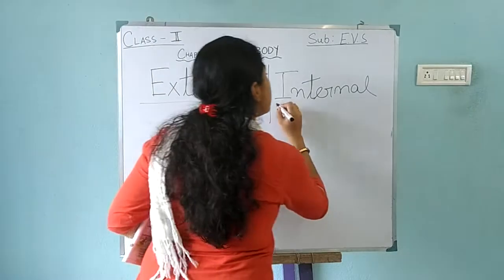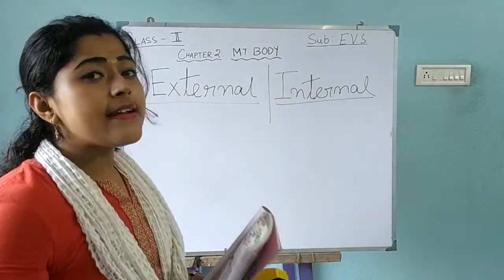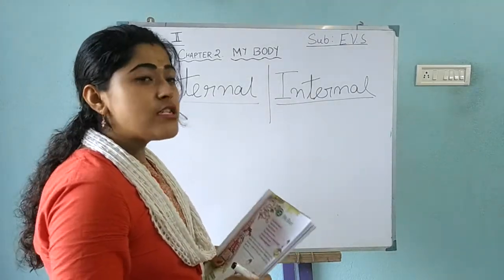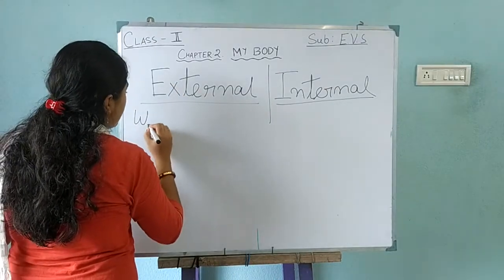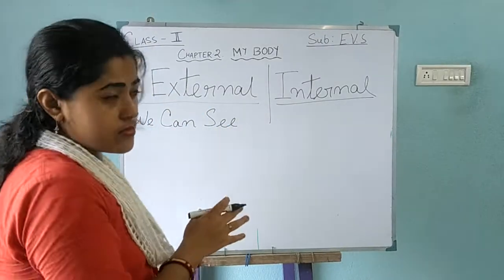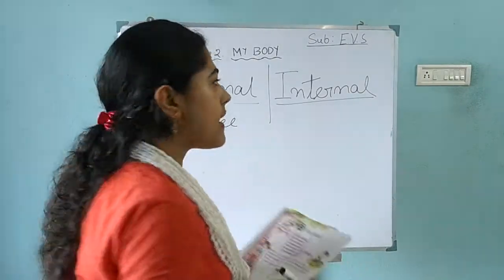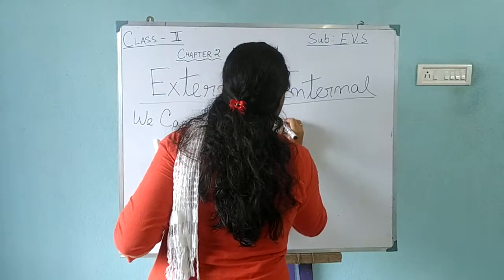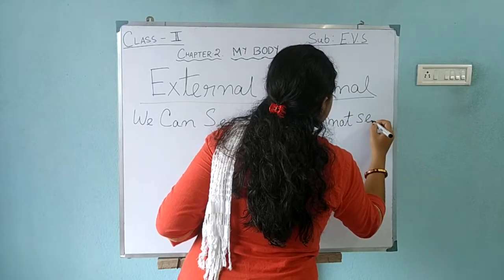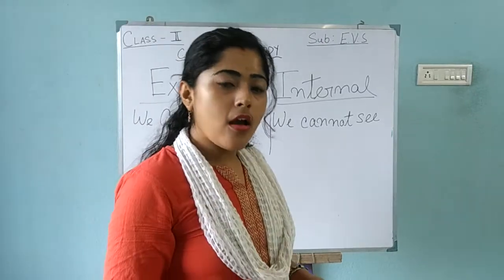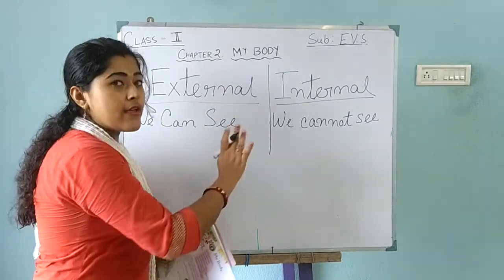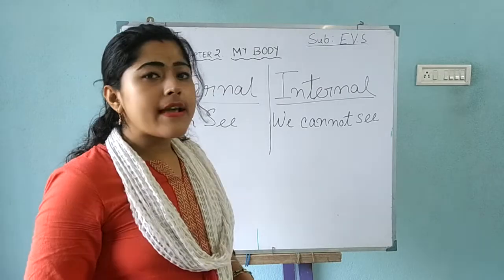External and internal — which is external? External organs are those parts which we can see. Those organs which we can see are called external organs. And internal organs we cannot see — those organs we call internal organs. External are the parts of our body we can see, and internal we cannot see.